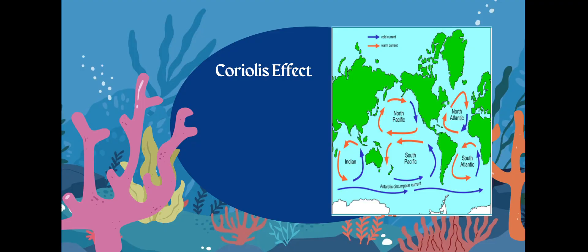The Coriolis effect is the movement of currents, and that's due to wind, temperature, and density. In the Northern Hemisphere, currents move clockwise. In the Southern Hemisphere, they move anticlockwise — opposite of a clock, or as we say in the States, counterclockwise.